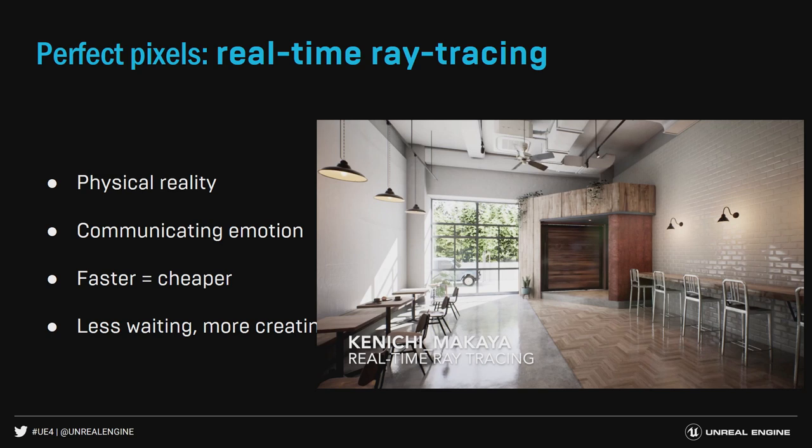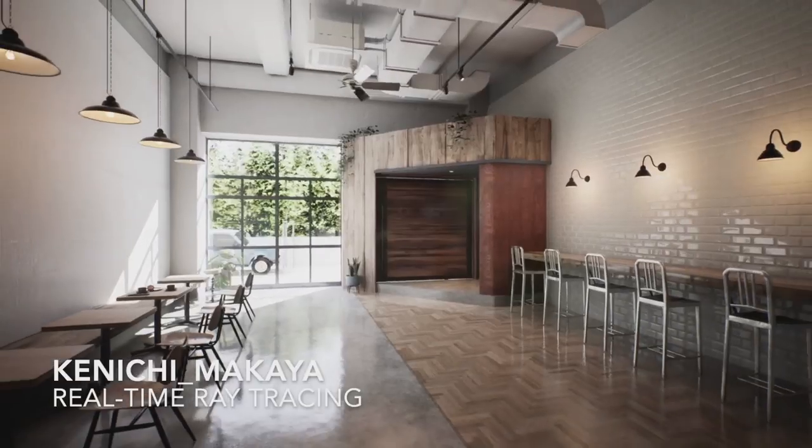This idea of perfect pixels — with Unreal, we're doing a lot of stuff in the real-time space, as well as with real-time ray tracing. This really brings in an additional level of physical reality. We have this ability to communicate emotion with that beautiful physical reality, whether it's dramatic lighting or a dramatic scene that really conveys emotion within a design. And less waiting, more creating — faster is cheaper. If we can create something beautiful and compelling very quickly and put it out there, this usually ends up winning people a lot more work.